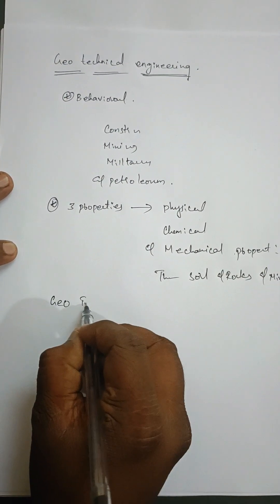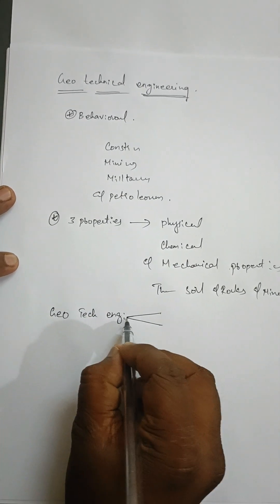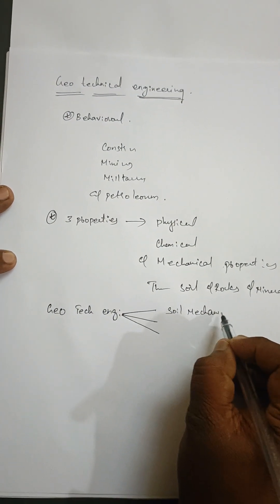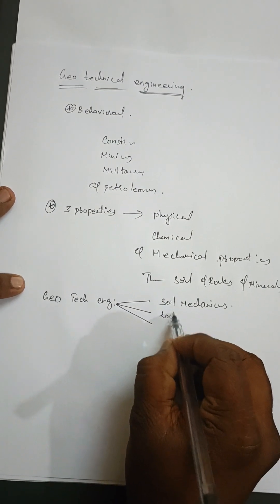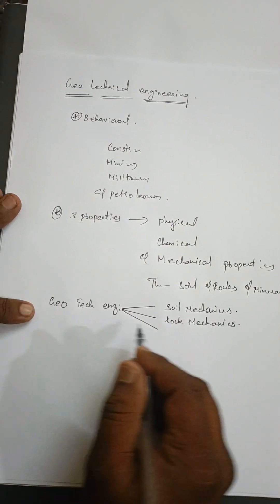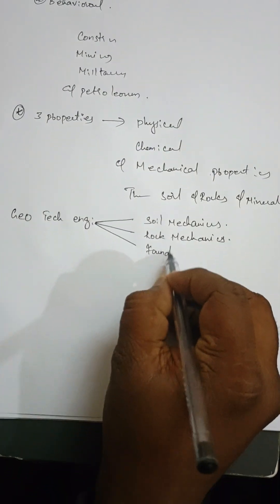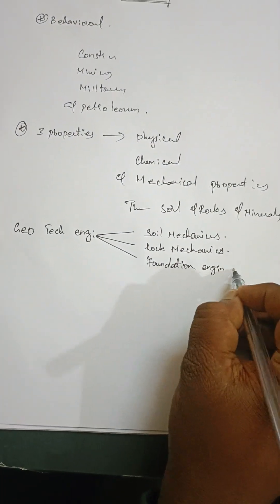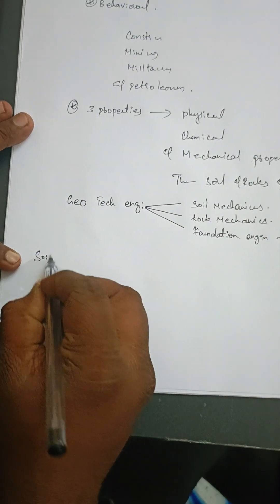When geotechnical engineering is divided, it is divided into three parts. The first is soil mechanics — most of you will have heard of this, and it will be in your syllabus. The second is rock mechanics, which is a further extension studied at higher levels of education. The third is foundation engineering, which is a specialization in geotechnical engineering studied at higher education levels.